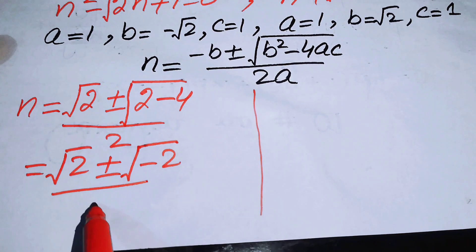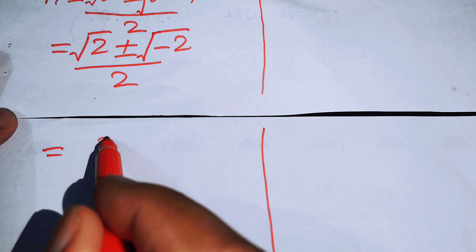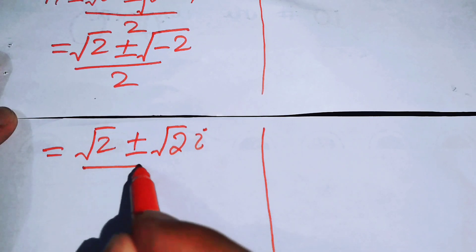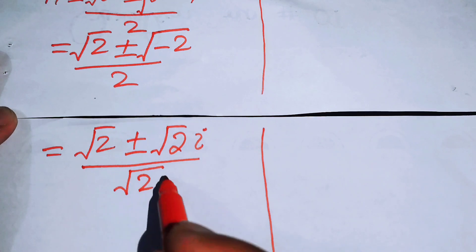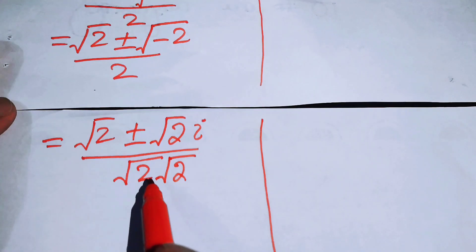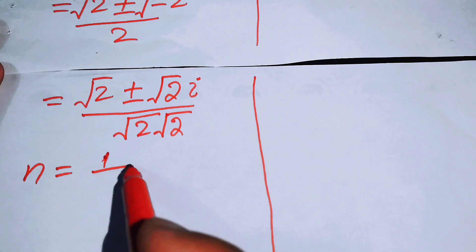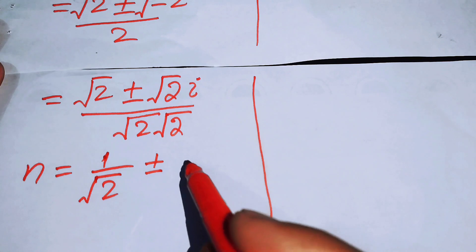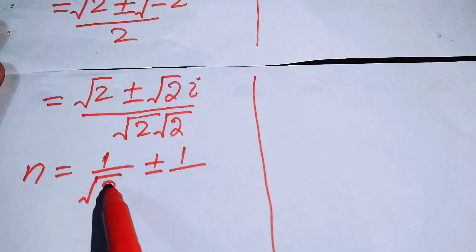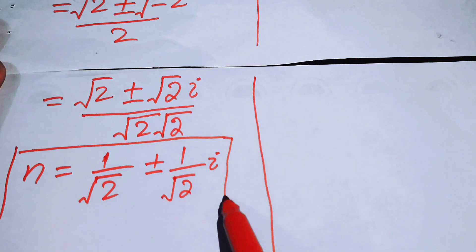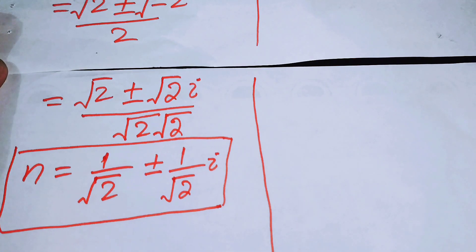Since we have a negative under the square root, we write √(−2) = √2 · i. So n = (√2 ± √2·i) / 2. Writing 2 as √2 · √2 and separating the terms, we get the two roots: n = 1/√2 ± (1/√2)·i. These are the two roots from Case 1.